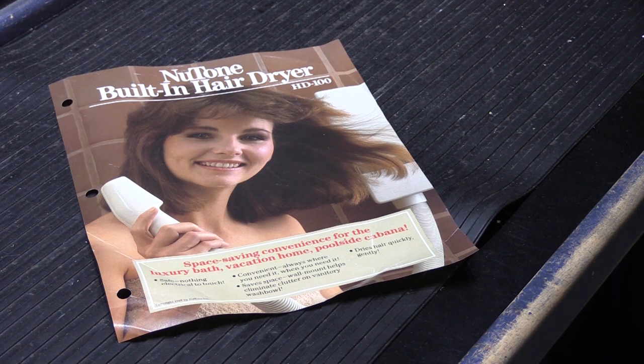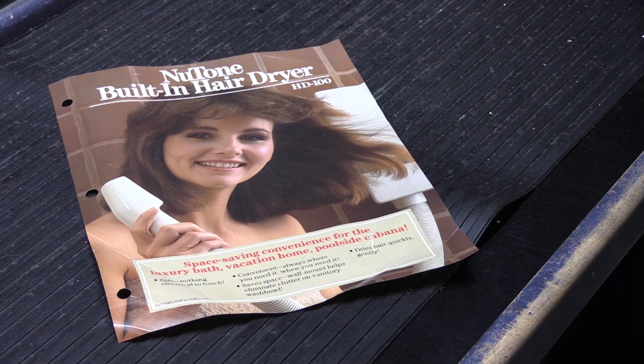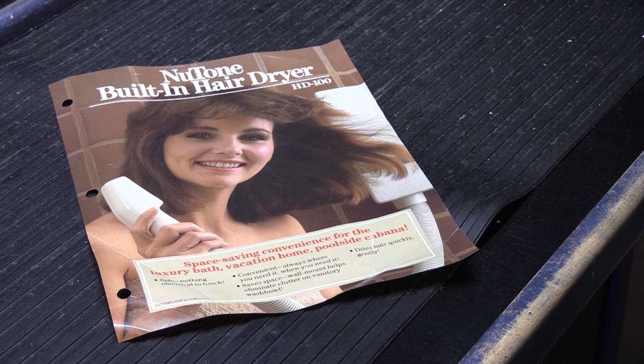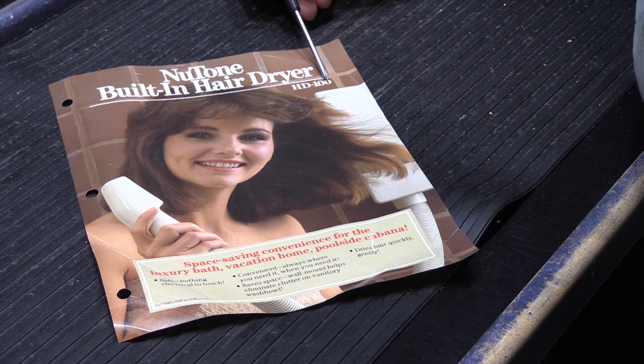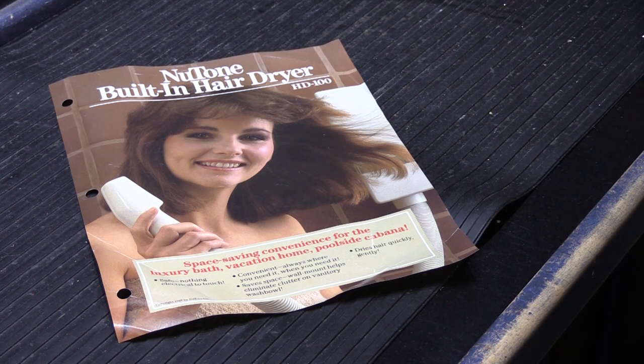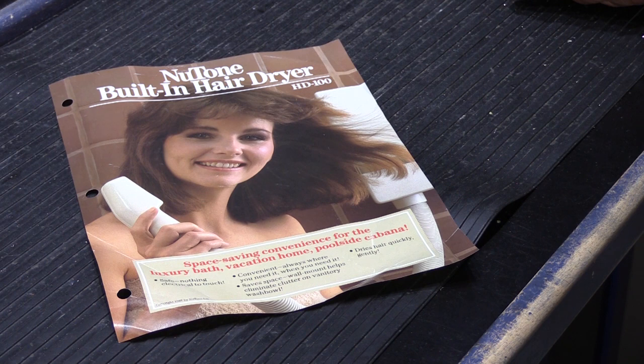So back in the late 1980s, NuTone actually came out with a whole array of what turned out to be pretty silly and goofy products. And one of those silly and goofy products was the NuTone built-in hair dryer model HD-100. This was only manufactured or available for a couple of years. It disappears from the catalogs in 1991, so I think they only made it for two years or so.